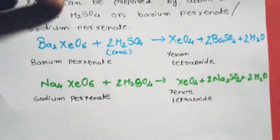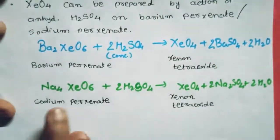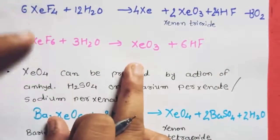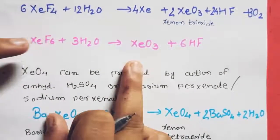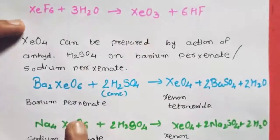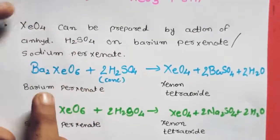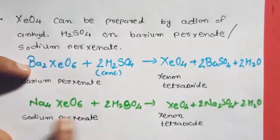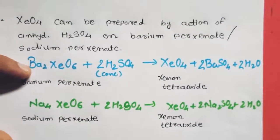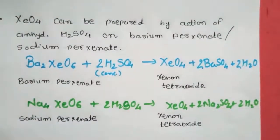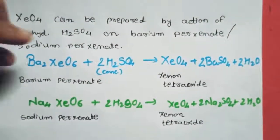To summarize the preparation: XeO₃ is prepared by hydrolysis of XeF₄ and XeF₆. XeO₄ is prepared from barium perxenate and sodium perxenate. Now let's look at the properties.